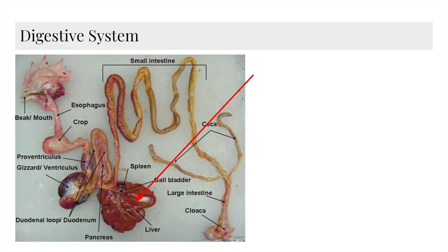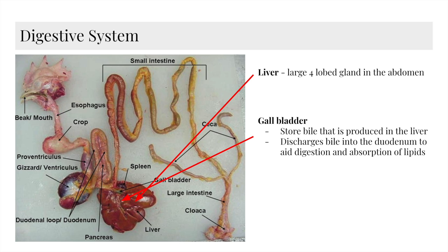We really couldn't get the liver and the gallbladder, so here's a diagram. The liver is a large four-lobed gland in the abdomen. The gallbladder stores bile that is produced in the liver, and it also discharges bile into the duodenum to aid digestion and absorption of lipid.